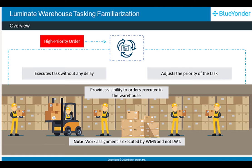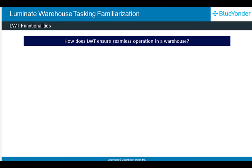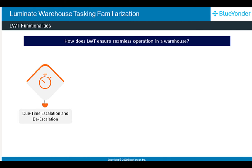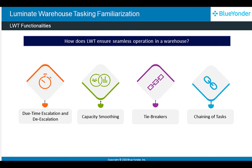Note that the work assignment is executed by WMS, and not LWT. So, how does LWT ensure seamless operation in a warehouse? What are its functionalities? LWT ensures seamless operation in a warehouse by escalating and de-escalating tasks based on due date and time, capacity smoothing, tie-breaking, and chaining tasks.